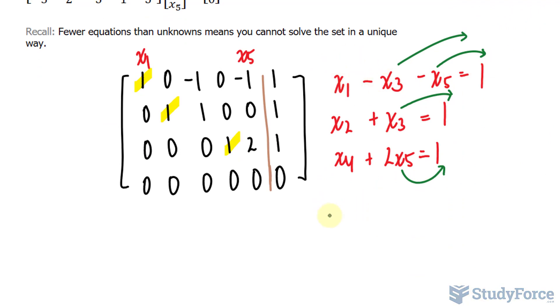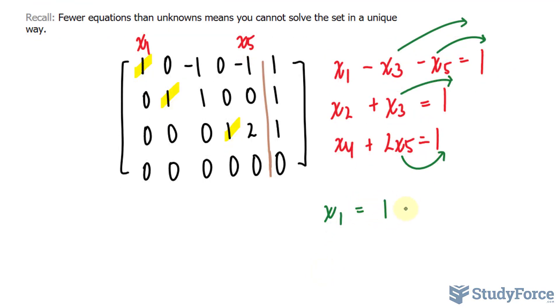If you do that correctly, this one should look like this. x sub one is equal to one plus x sub three plus x sub five. Notice that they went from being negative to positive and that's expected. We also have this constant.